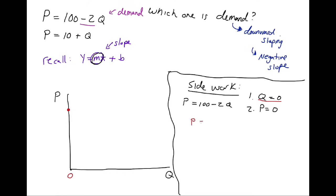And so when Q equals 0, that would be P equals 100 minus 2 times 0. So P must equal 100. So you see how when Q equals 0, that's got to be at the origin of Q equaling 0. And so P must be 100.